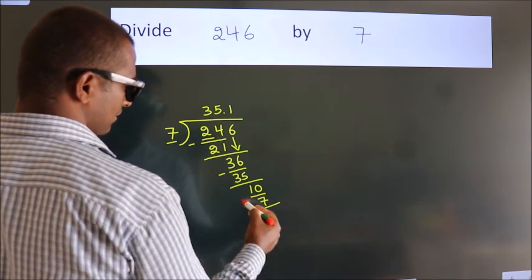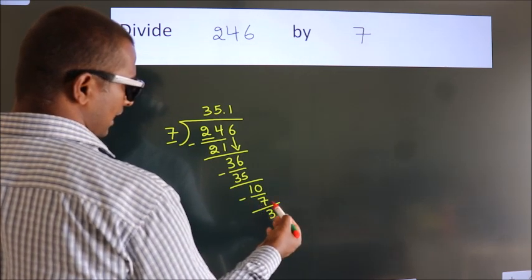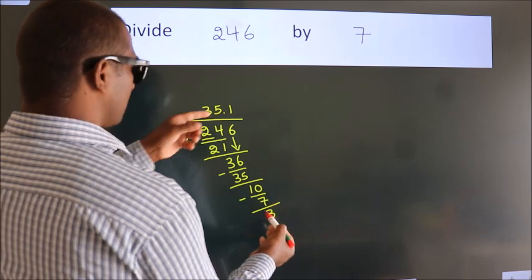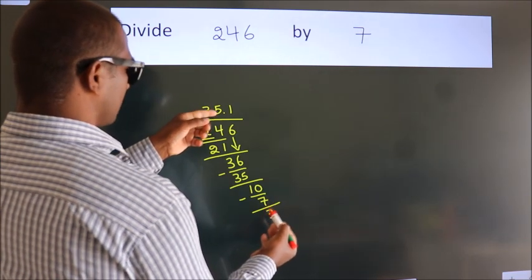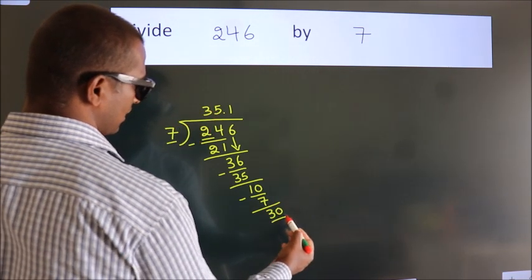Now we subtract. We get 3. After this, we already have the decimal, so directly take 0. So 30.